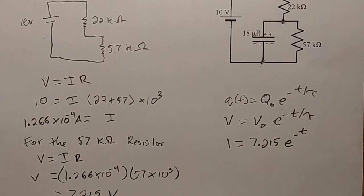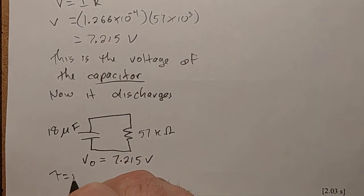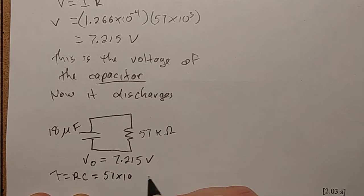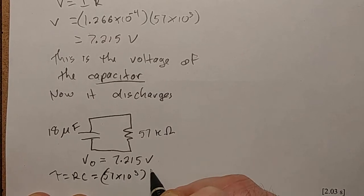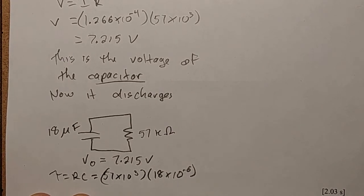Hey, I didn't find tau. I better find tau for this circuit. Tau equals RC equals 57 times 10 to the 3 times 18 times 10 to the negative 6. And from that, I get 1.026 seconds.